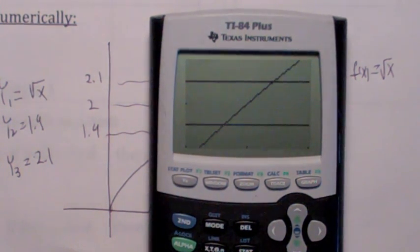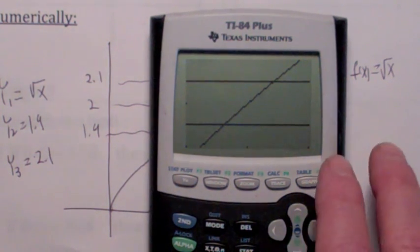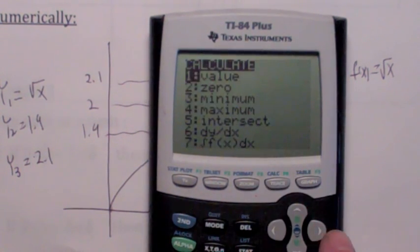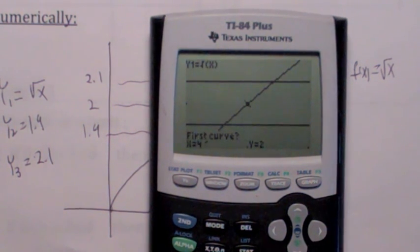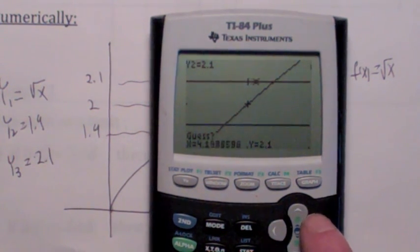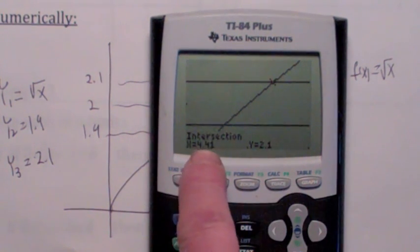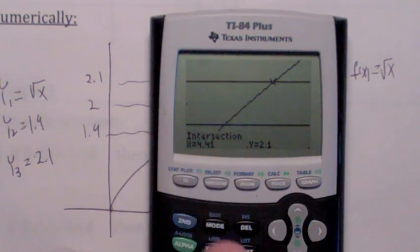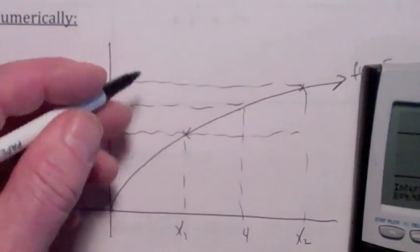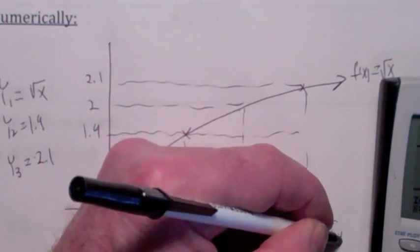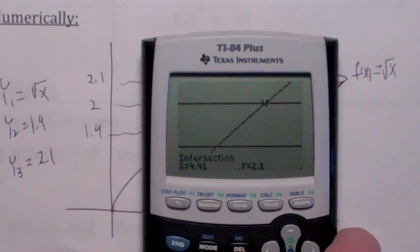So, I'm going to find where those graphs cross by using second calc intersect. And the first curve is the square root function. Hit enter. The second curve is 2.1, or see, on my end it is. Hit enter. And now it says guess. So, you move close to that point and I get that this is, on my previous one, this is x2, isn't it? X2 becomes 4.41. So, this point right here is 4.41.